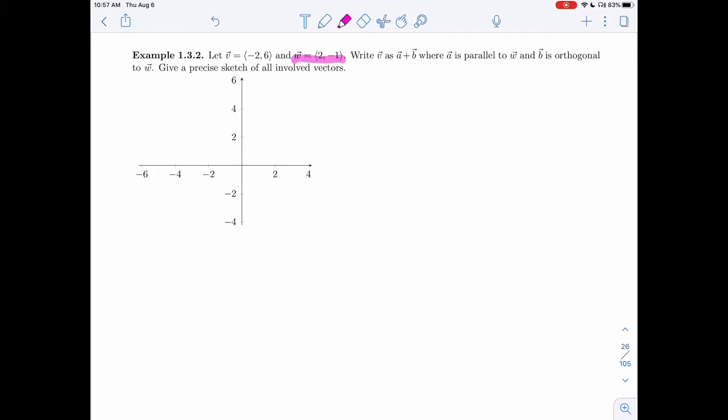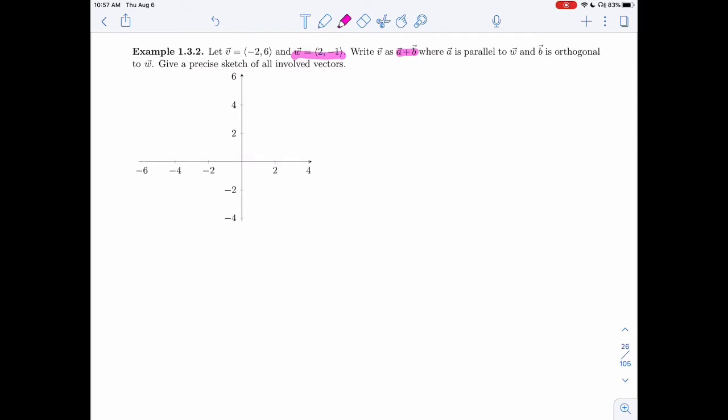I want to write V as A plus B. As soon as you see this, you're thinking projection. Even if they don't use the letters A and B, if you write V as a sum of vectors and you're given that A is parallel and B is orthogonal, it's screaming projections at you. And then I have W. While A is parallel to W, so here really W is our direction, so it's our D. So whatever direction you need, that's your D.